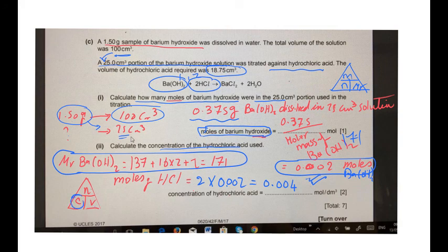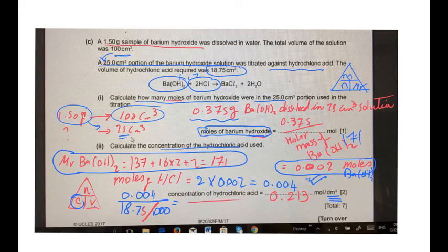you will divide the number of moles over volume. So, 0.004 over the volume, which was 18.75. But remember to divide by 1000 because it's given in cm³ and the unit here is dm³. So, the final answer equals the concentration of hydrochloric acid is 0.213 moles per dm³.